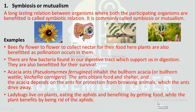Examples of symbiosis or mutualism: Bees fly flower to flower to collect nectar for their food, and plants are also benefited as pollination occurs. Certain bacteria found in our digestive tract support digestion and are also benefited for their own survival. Acacia ants inhabit bullhorn acacia — the ants obtain food and shelter, and the acacia depends on the ants for protection from browsing animals. Ladybirds live on plants eating aphids, benefiting by getting food while the plant benefits by being rid of the pests.